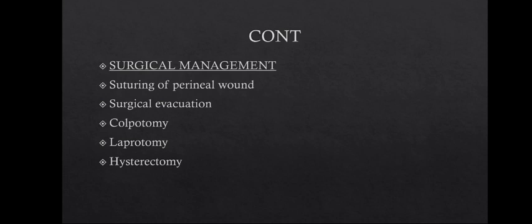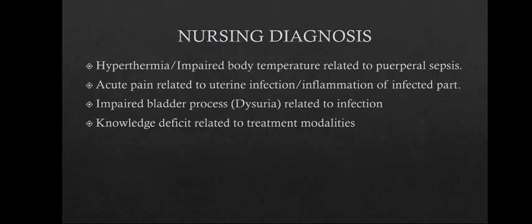Nursing diagnoses for puerperal sepsis include: impaired body temperature or hyperthermia related to puerperal sepsis; acute pain related to uterine infection or inflammation of the infected wound — as patients with severe uterine infection may experience abdominal pain; impaired bladder process (dysuria) related to infection; anxiety related to health status; and knowledge deficit related to treatment modalities.